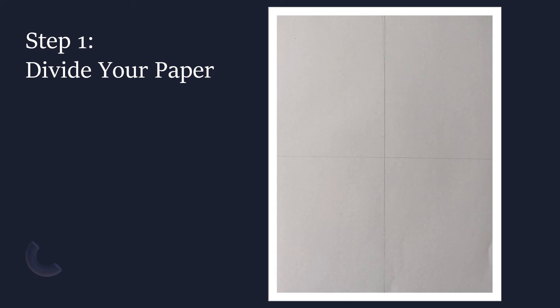Step one: we're going to divide our paper. Using your pencil and your ruler, you're going to very lightly draw and divide your paper into four different separate sections. You'll want to either measure or use your eye to find the middle point of your paper on the top and draw a vertical line all the way down, then do the same from side to side. You should end up with four equal rectangles, and this is going to help us draw what we need to in each section.